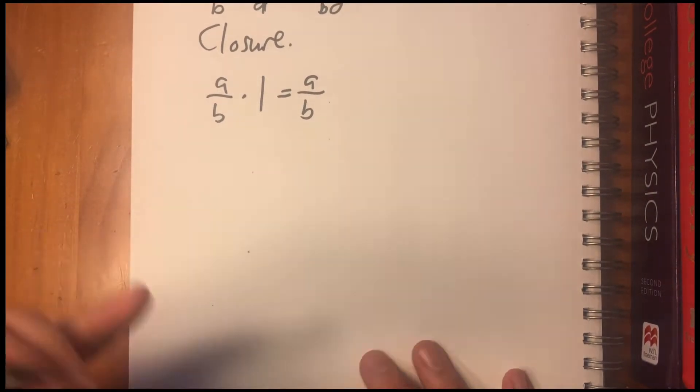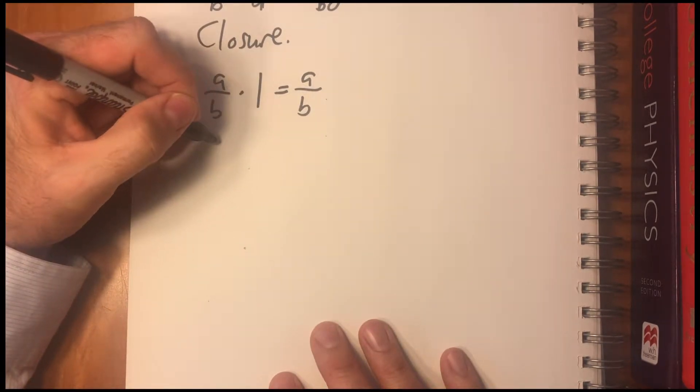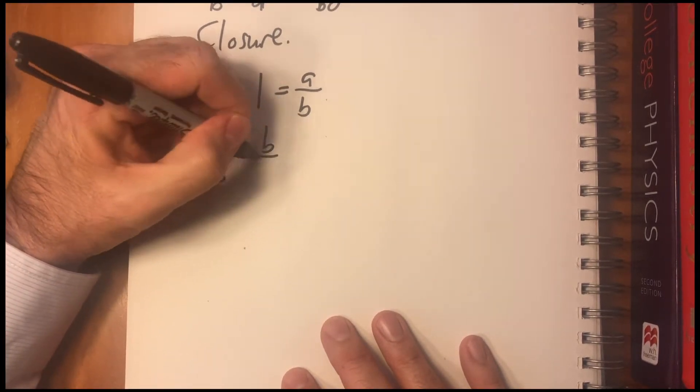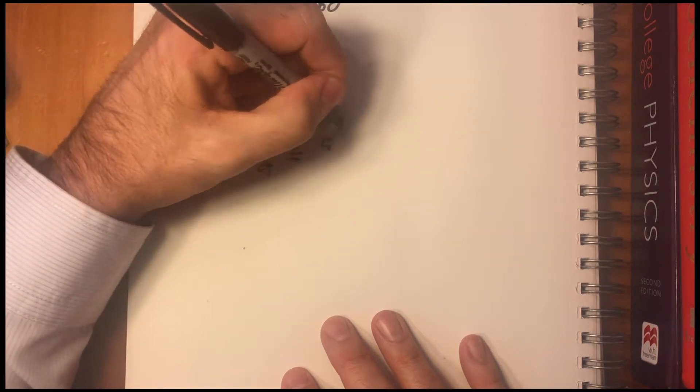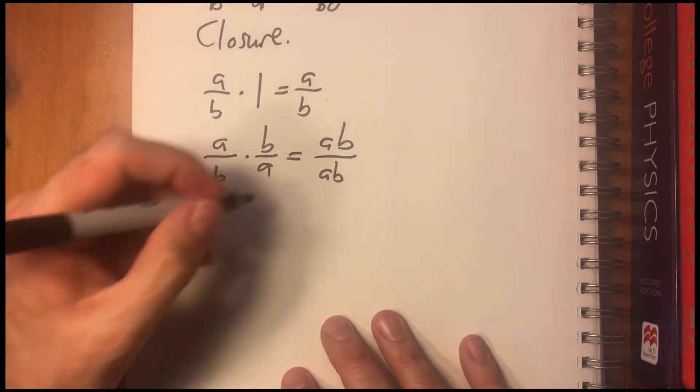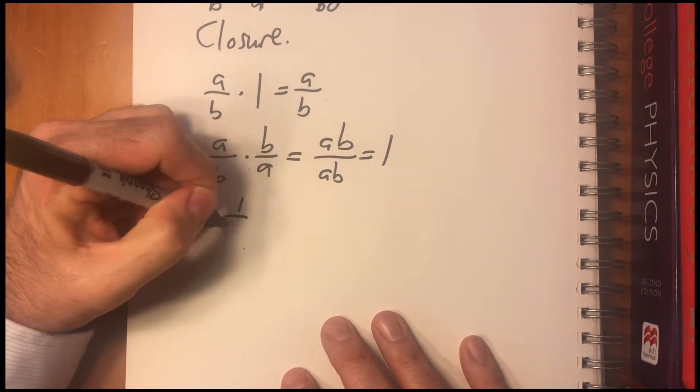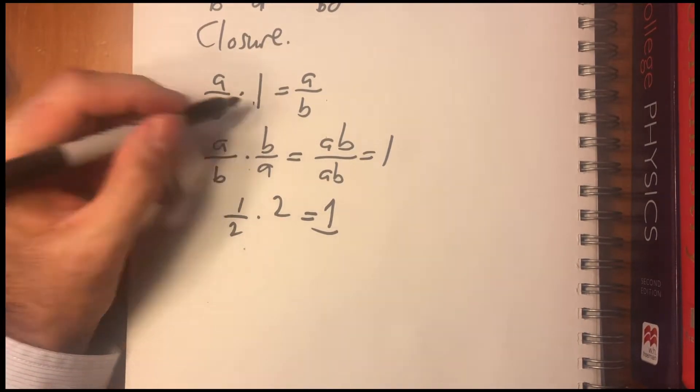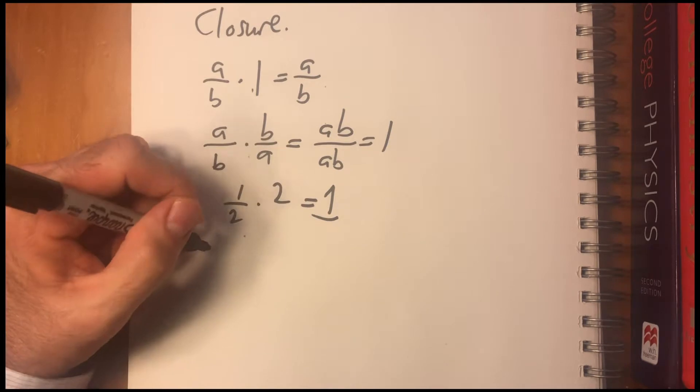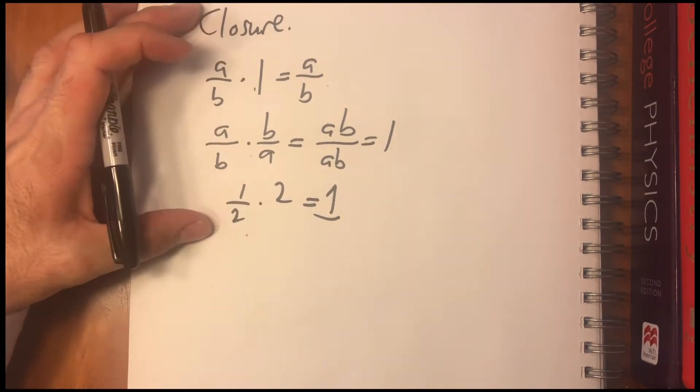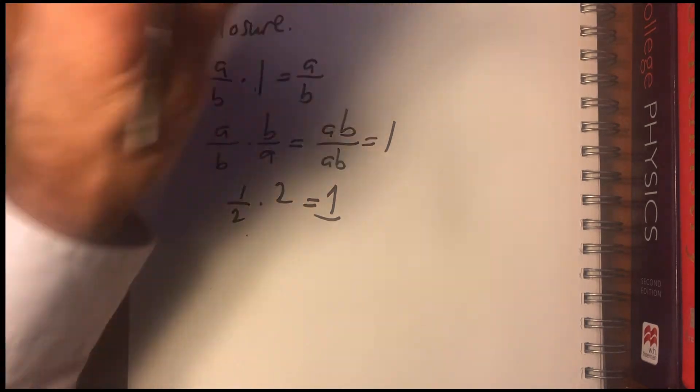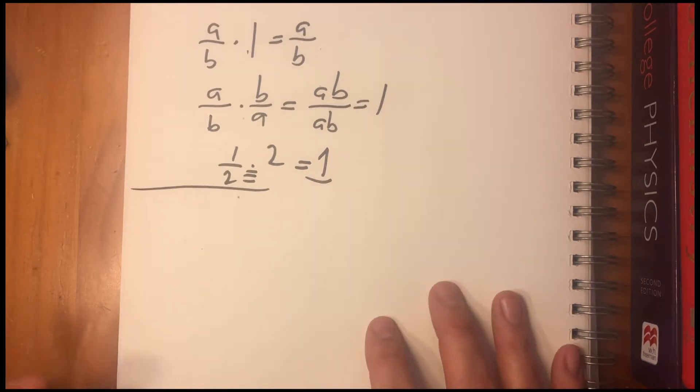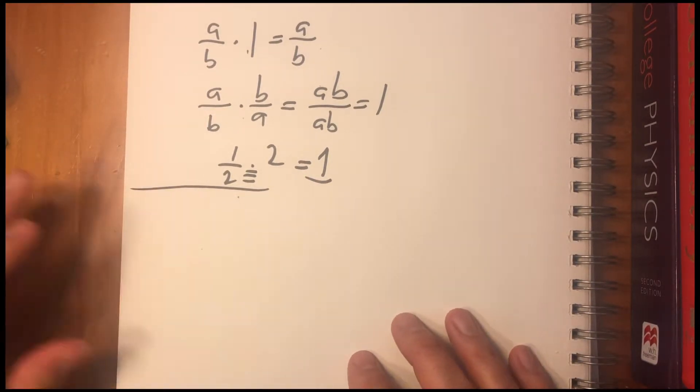And is there, and every fraction has an inverse, right? You just, just take the reciprocal. A over B times B over A equals AB over AB. So that equals one, right? One half times two equals one. So, this is the identity. That's the inverse. So we have the four axioms. So rational numbers over, positive rational numbers also form a group. And in this case, the binary operation is multiplication instead of addition.